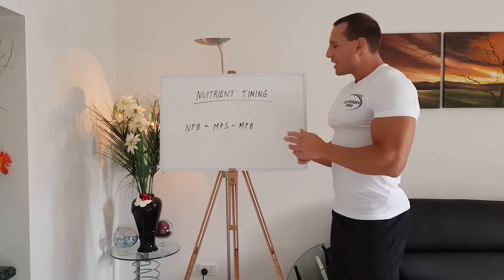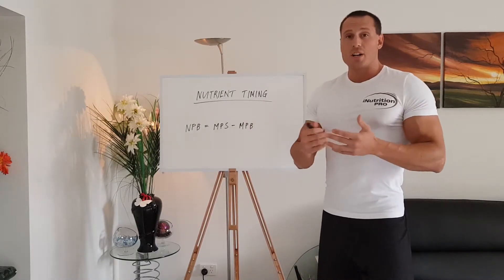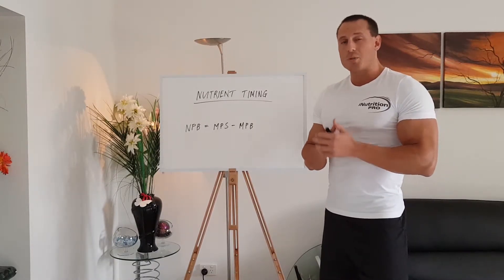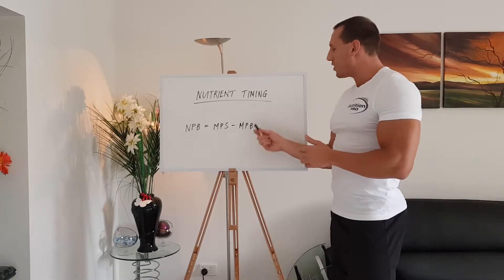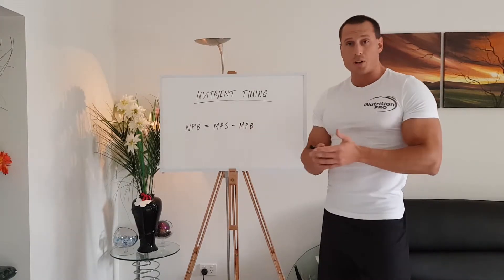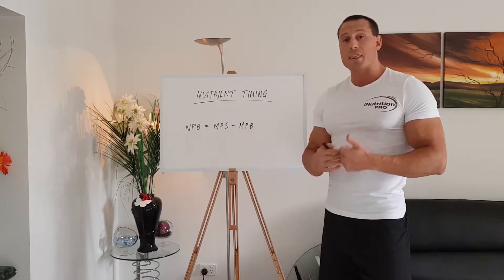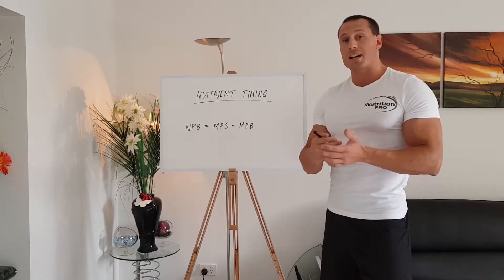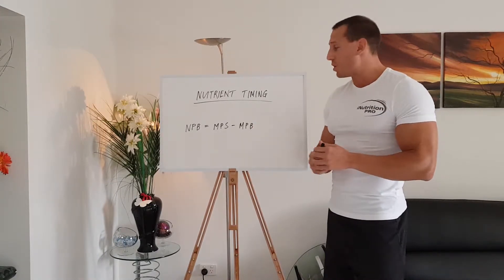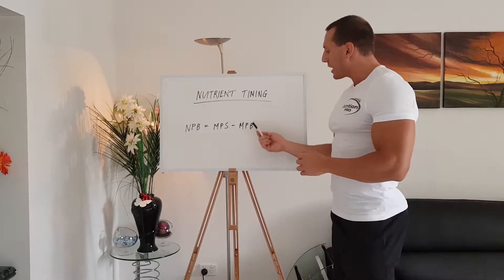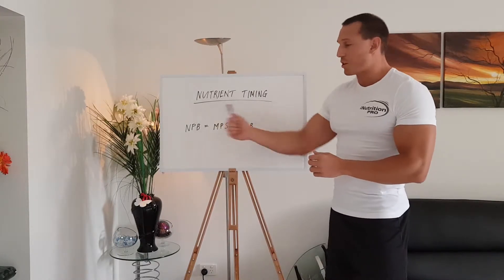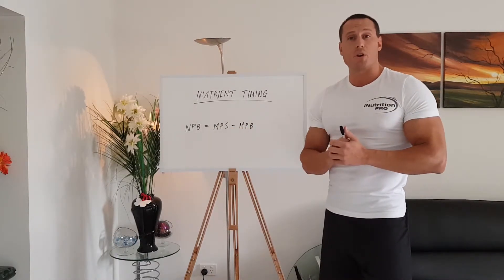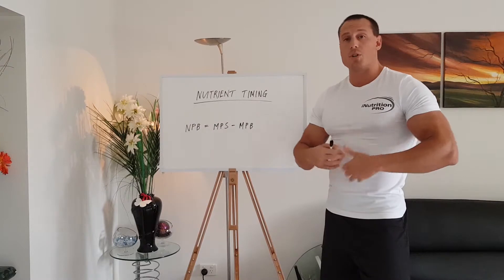Now let's look at carbohydrate and fat. Carbohydrate and fat are not anabolic, but they are anti-catabolic. By mitigating muscle protein breakdown, they can also increase net protein balance.